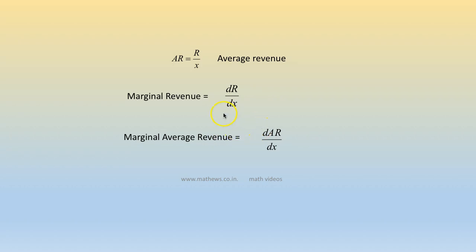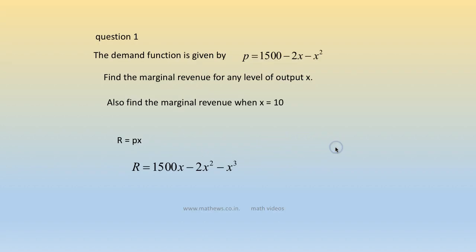Coming to certain terms: average revenue is total revenue divided by x; marginal revenue is the derivative of the total revenue; and marginal average revenue is the derivative of the average revenue.